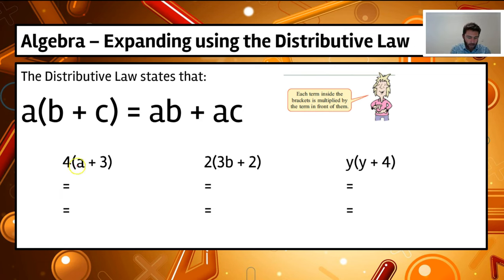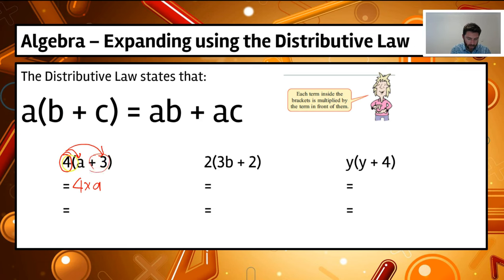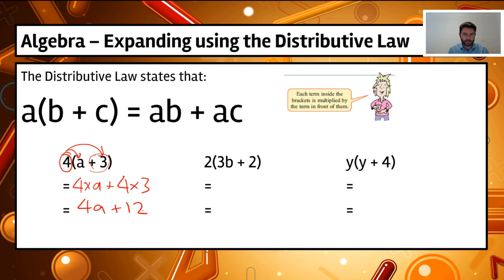We've got four multiplied by a plus three. What we do is multiply four by a first — so four times a — and then multiply four by plus three, giving us plus four times three. Two positives make a positive, so that gives us 4a plus 12.